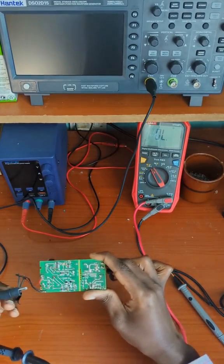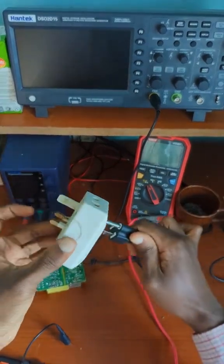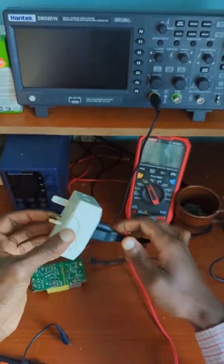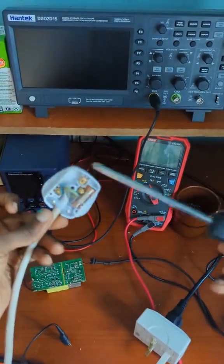To isolate the oscilloscope from the mains earth, you can use an adapter like this without an earth connector, or disconnect the earth from the plug or from the socket.